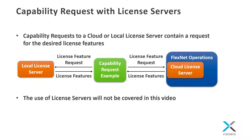Additionally, licenses can be requested from a license server. FlexNet Embedded license servers contain a pool of license features that can be accessed by multiple devices. When performing a capability request and response exchange with a FlexNet Embedded cloud or local license server, the capability request contains the desired license features as opposed to an activation ID. The license server will return the features to the device if they exist and the requested quantity is available.